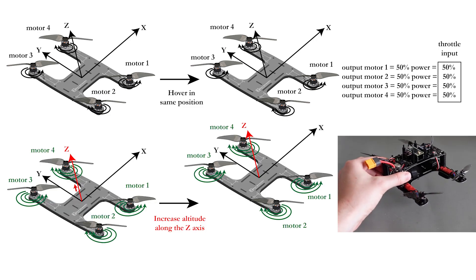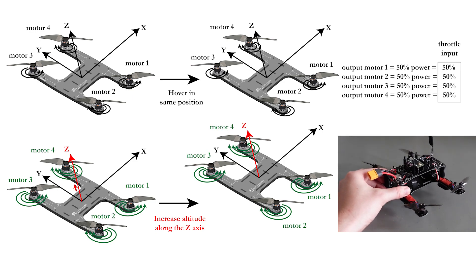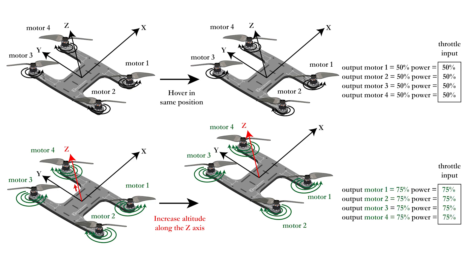To increase the altitude at which your drone is flying, you simply increase the power of all four motors to for example 75%. In order for the quadcopter to stay level, it is important that all motors increase their power at the same time.